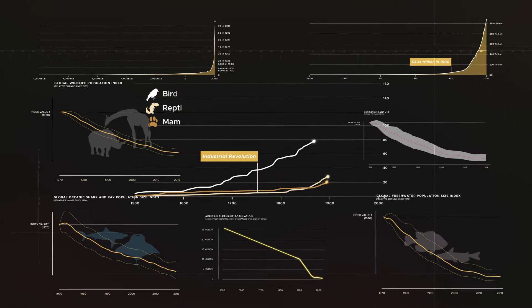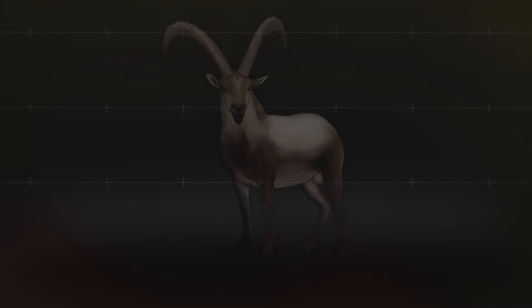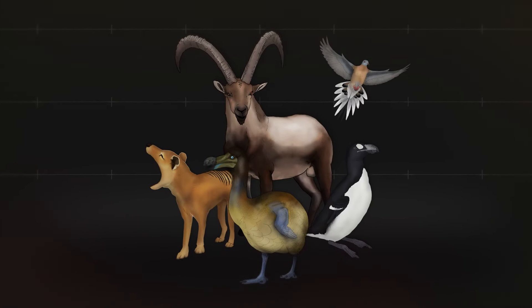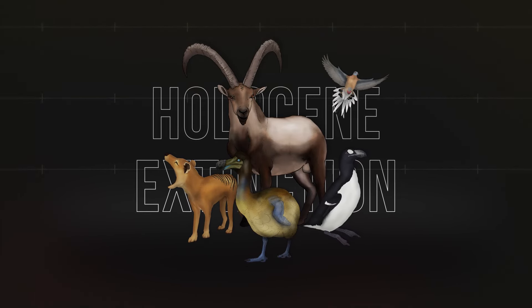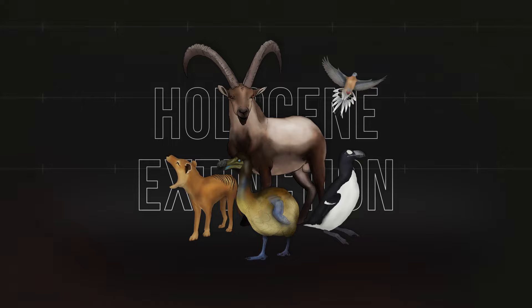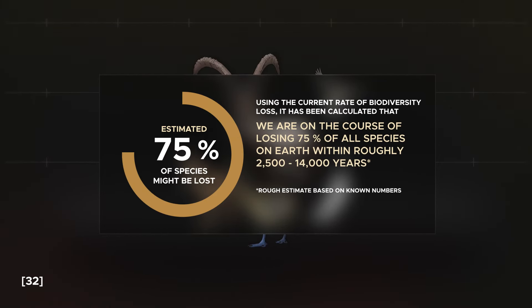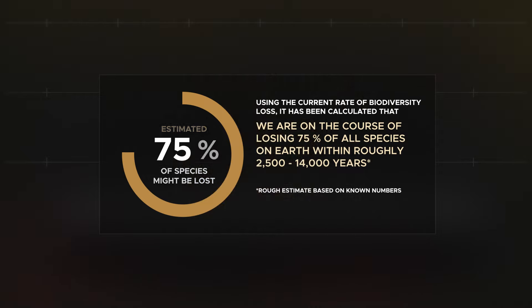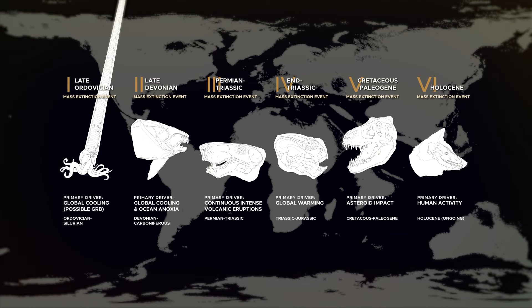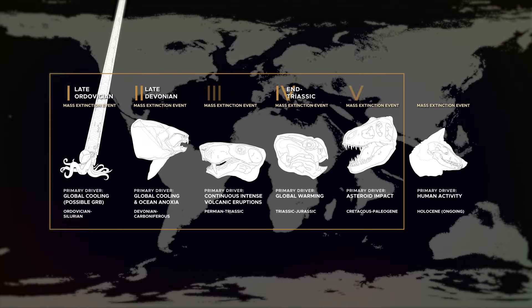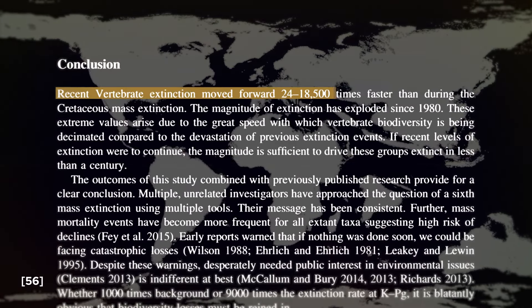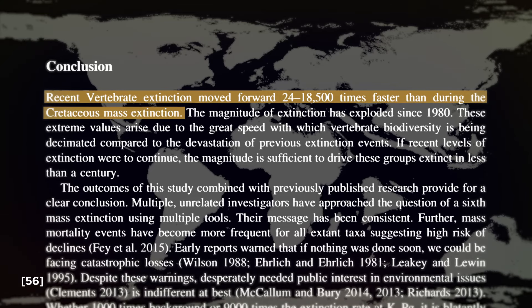It is statistically sound, and also plainly apparent, that the Holocene extinction is currently happening and it is accelerating at record-breaking speeds. With the current rate of biodiversity loss, it has been roughly estimated that we are on course to lose 75% of all species on Earth within just a few thousands of years. This is an exceptionally rapid loss of biodiversity, much faster than the previous Big Five mass extinction events, including the sudden catastrophic asteroid impact of the Cretaceous-Palaeogene extinction event.